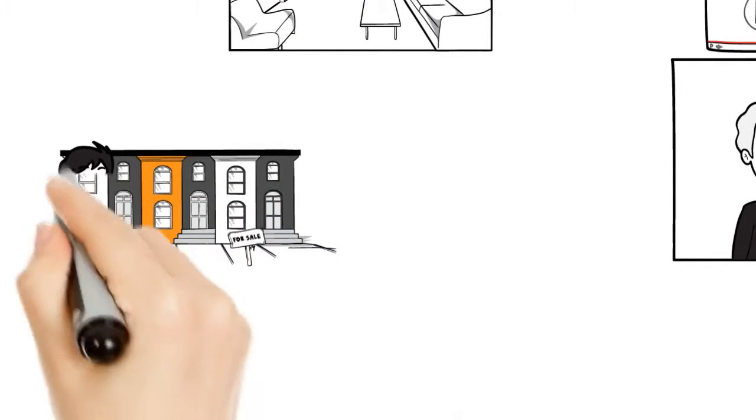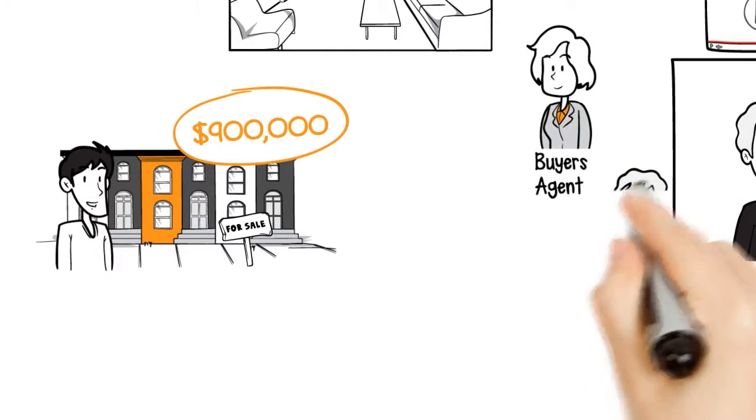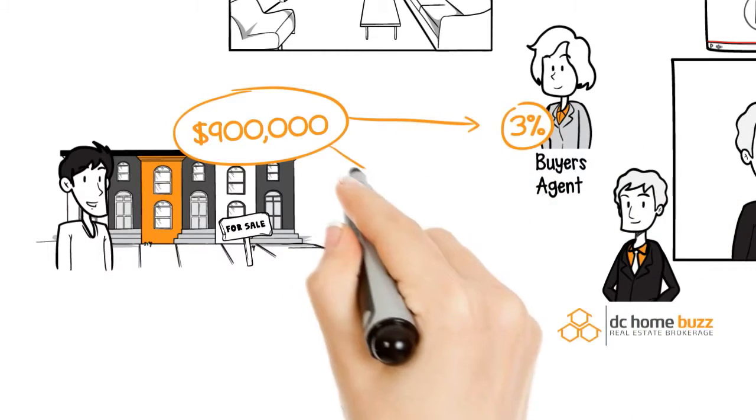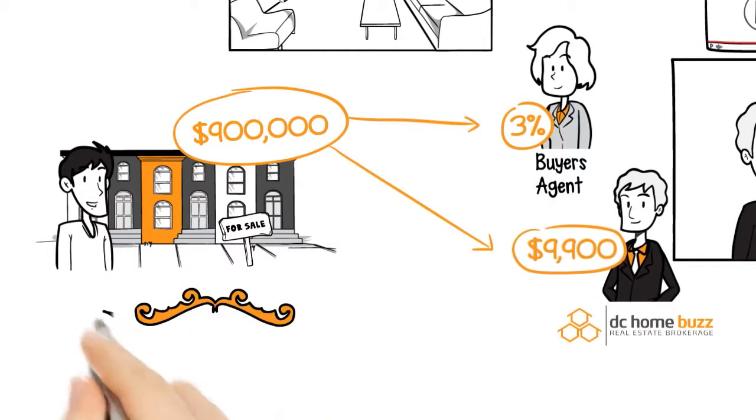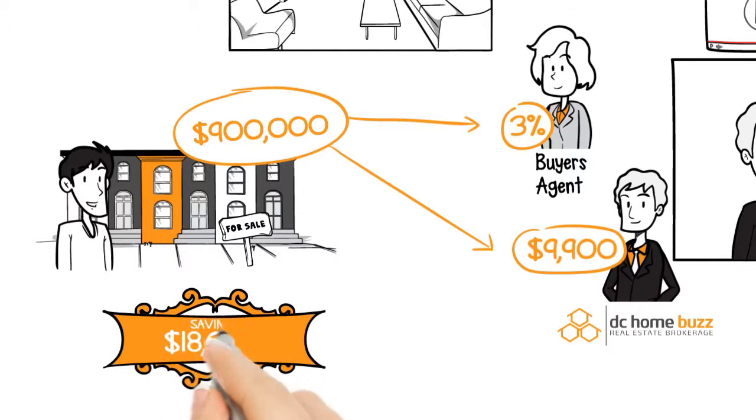With Flat Fee Full Service, if you're selling a $900,000 home, you're paying 3% for the buyer's agent and only $9,900 to us for savings of $18,000.